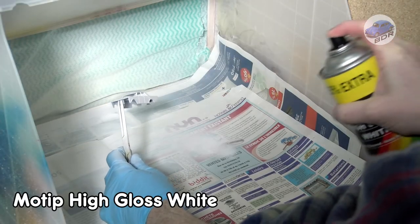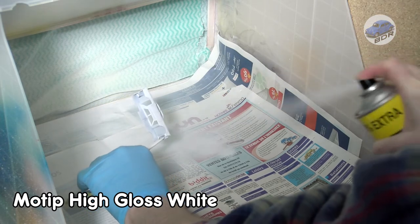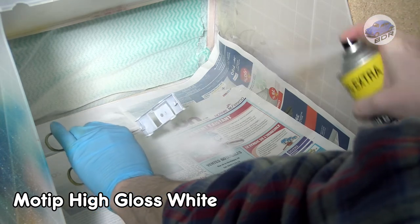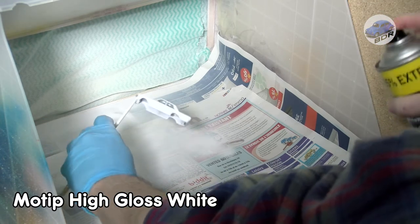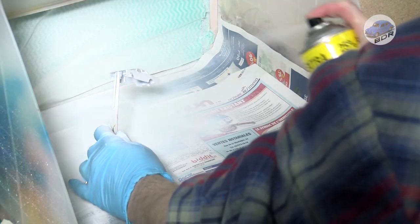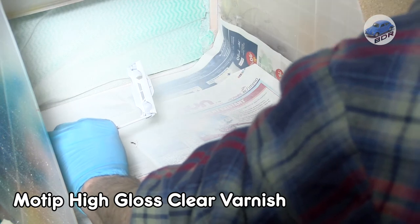Once the primer is dried the body is sprayed with two coats of Motip gloss white automotive spray paint. After the color coat has dried the paint job is sealed with Motip clear gloss automotive varnish.